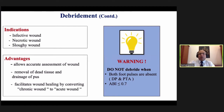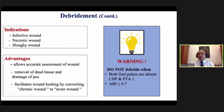Indications for debridement: infected wound, necrotic wound, and sloughy wound. Advantages: once necrotic tissue is removed, we can assess the size of the wound, underlying pus is drained, and most importantly debridement converts a chronic wound into an acute one. When not to debride: when both peripheral pulses are absent or ABI (ankle-brachial index) is less than 0.7 — in such cases, refer to your vascular surgeon, let him do angiography and decide whether angioplasty or another procedure is needed.